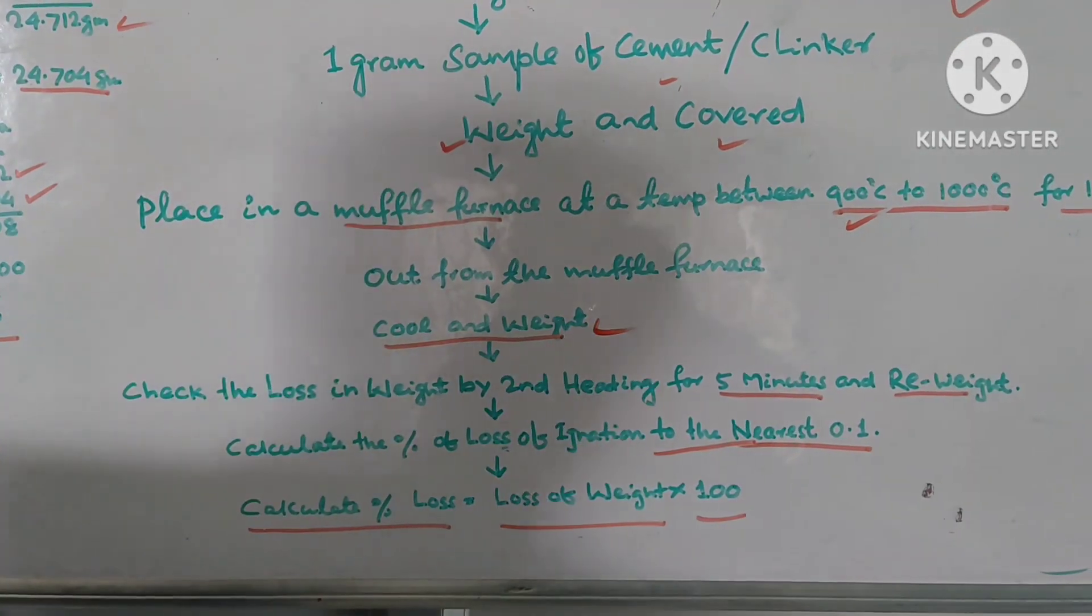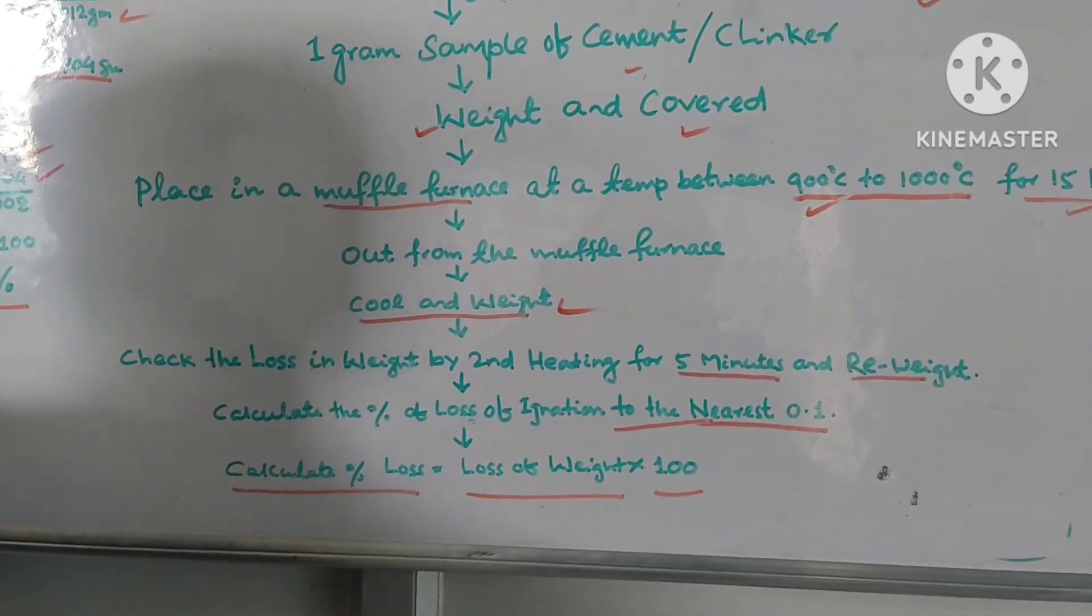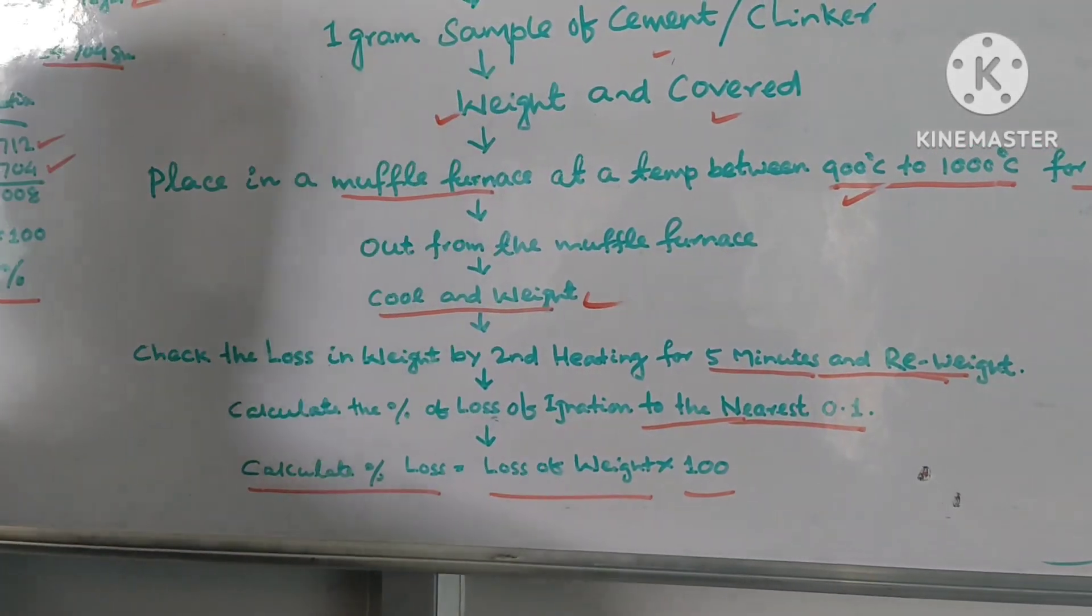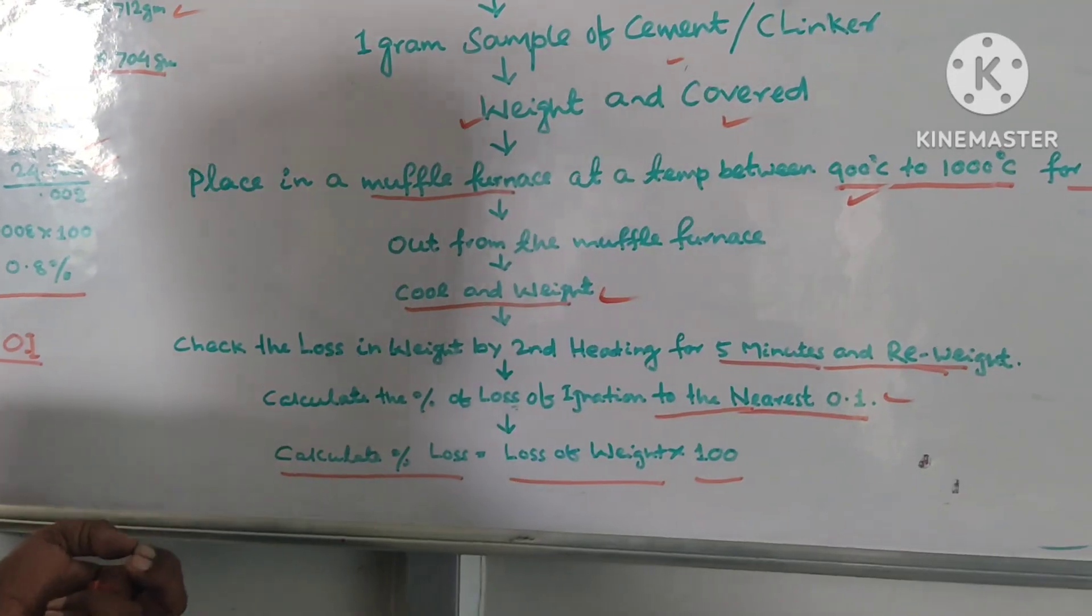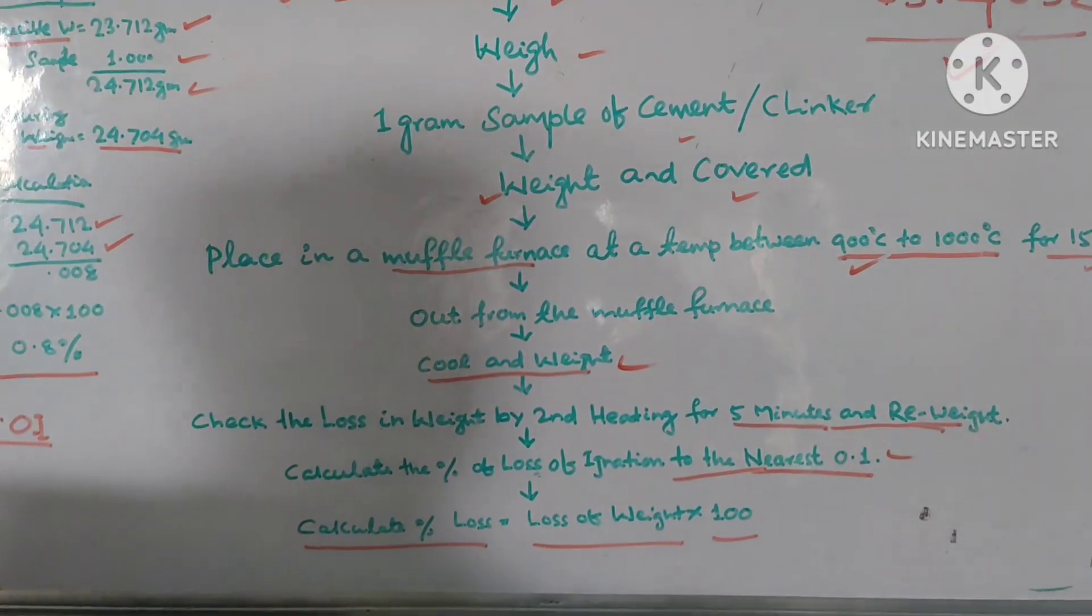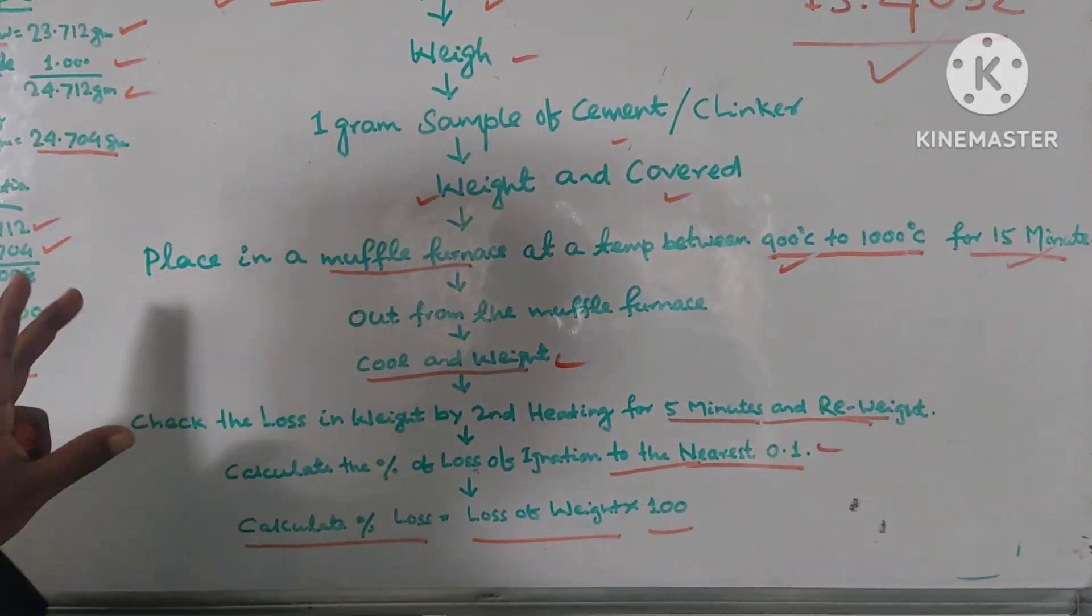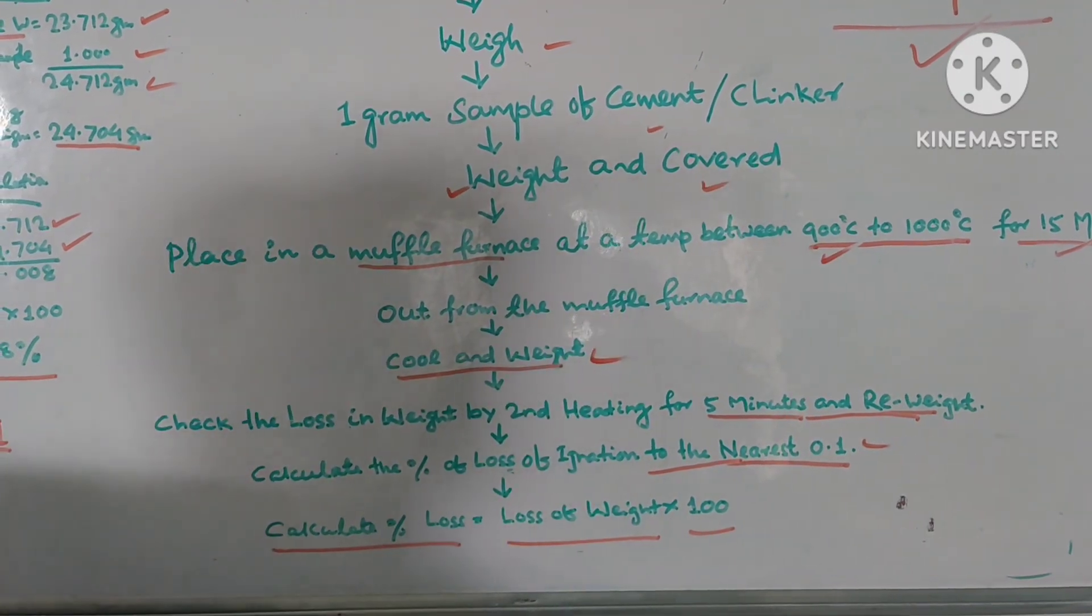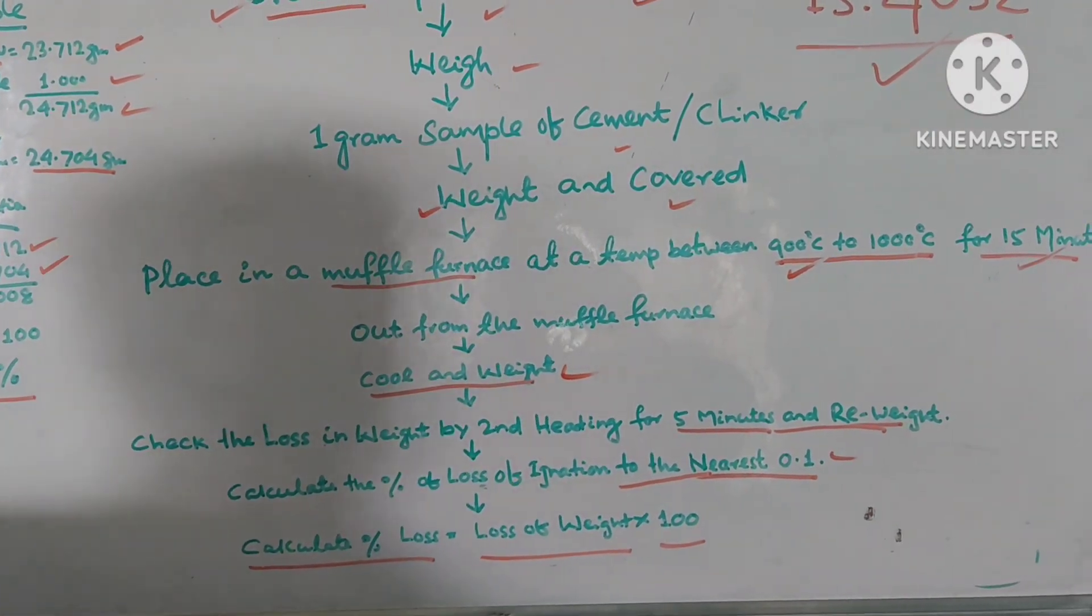But for cross verification, whether our loss ignition is further increasing or decreasing, you have to check after five minutes and recheck for reweigh. And calculate the percent of ignition to the nearest 0.1. Simple thing. Well, first you take one gram sample in the crucible and cover the lid and place in the muffle furnace. And when 15 minutes complete, you out from the muffle furnace and cool it and wet it. Complete done. And we have to judge the loss ignition after five minutes to reweigh, to recheck whether our loss ignition is increasing.